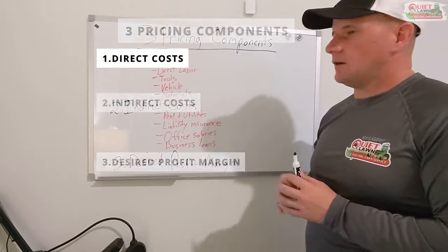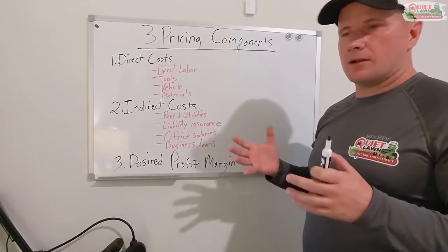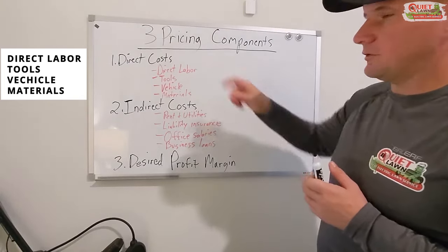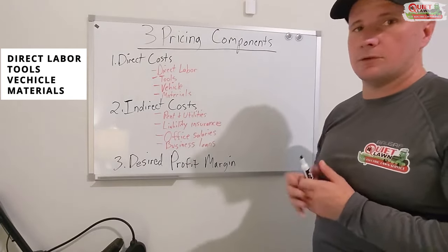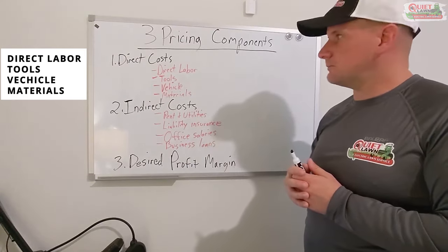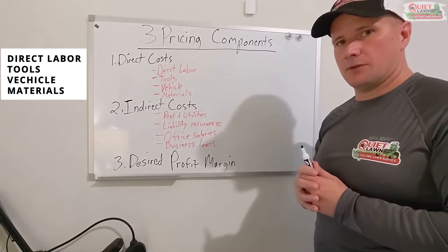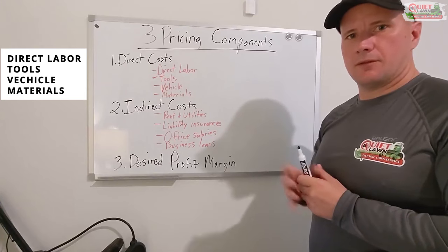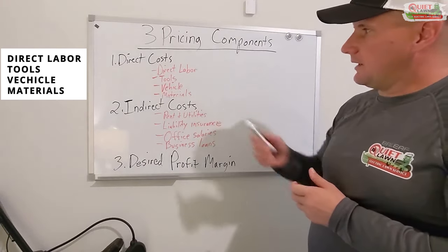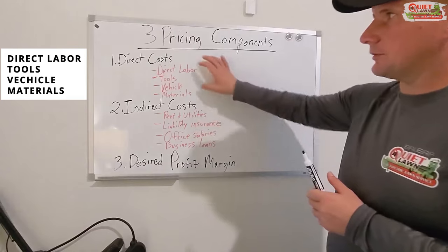Direct costs are costs that are directly tied to whatever service you're doing. So let's say you have a mowing service — direct cost would be the direct labor. If you have an employee, it would be their labor cost, whoever's performing that service. If it's you, then it would be your labor cost, and you need to make sure you include your own cost if you're the one doing that labor. It's going to include the tools doing that job — your mowers, weed eaters, edgers, blowers, all that stuff. It includes the vehicle you're using specifically for that service, and any materials like mulch — those would all be direct costs.